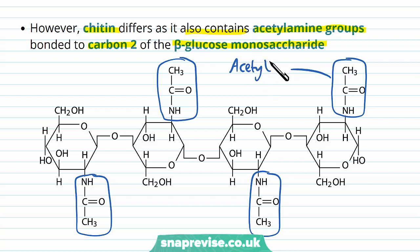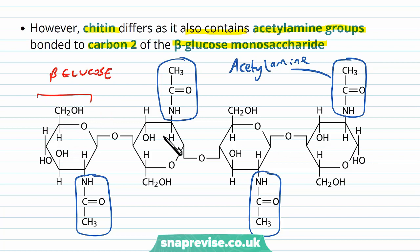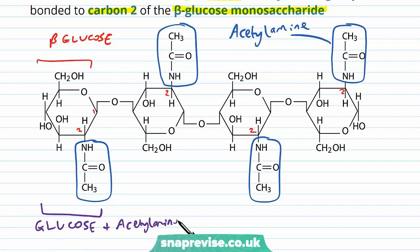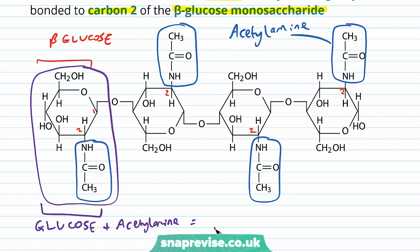Acetyl refers to acetic acid, and amine refers to something with a nitrogen and hydrogens in it. Each of these is a beta glucose molecule in the chain. Carbons are numbered, and if this is number one and this is number two, the acetylamine groups are always bound to carbon number two in the ring. When this chain of chitin is formed, the glucose plus the acetylamine group is given a particular name as a monomer — it's called N-acetylglucosamine.